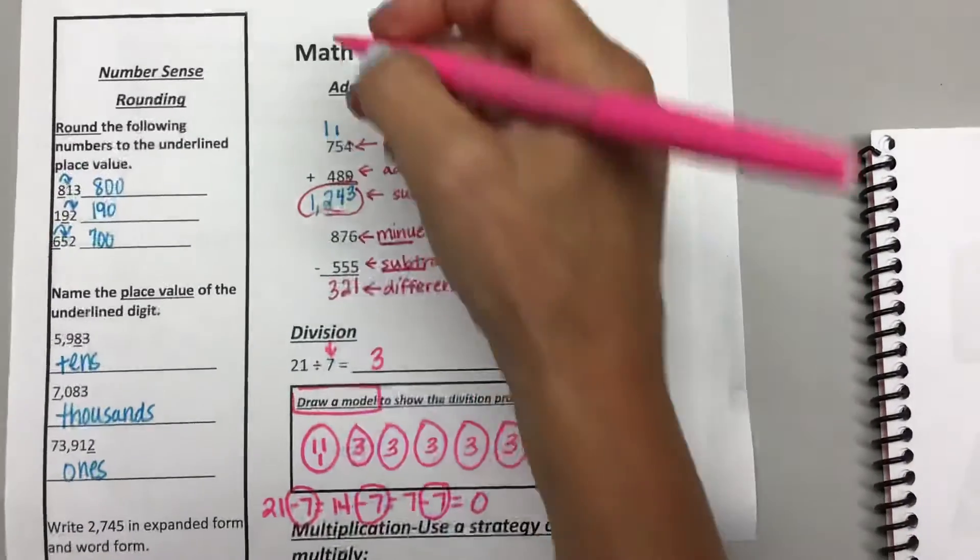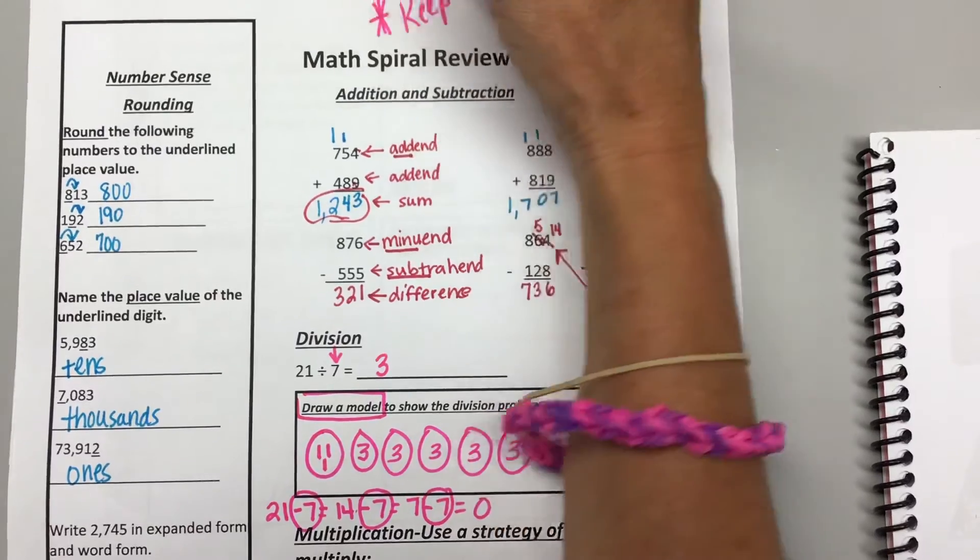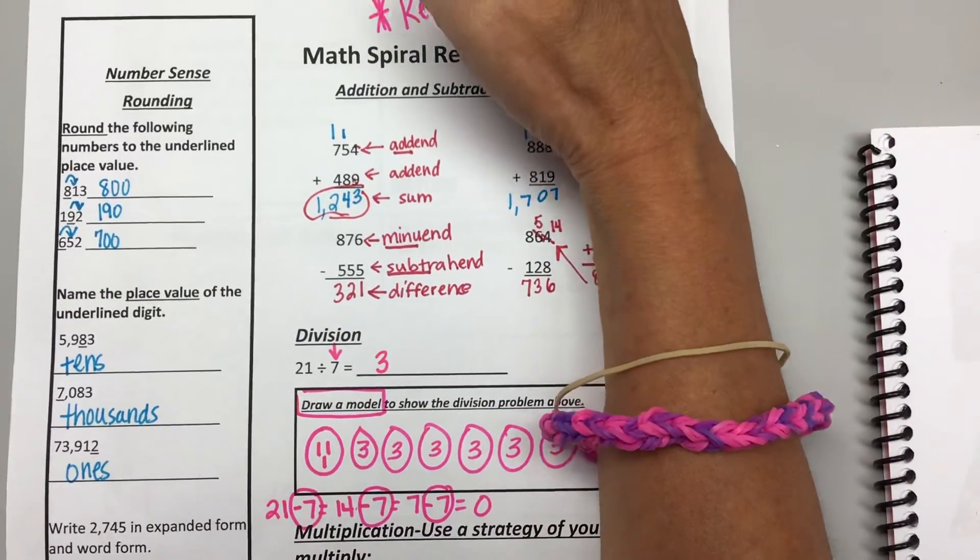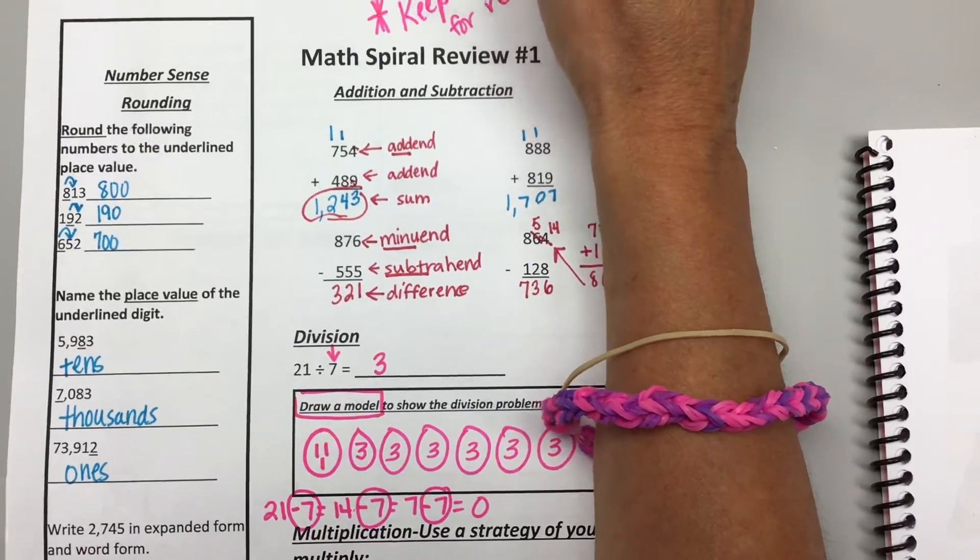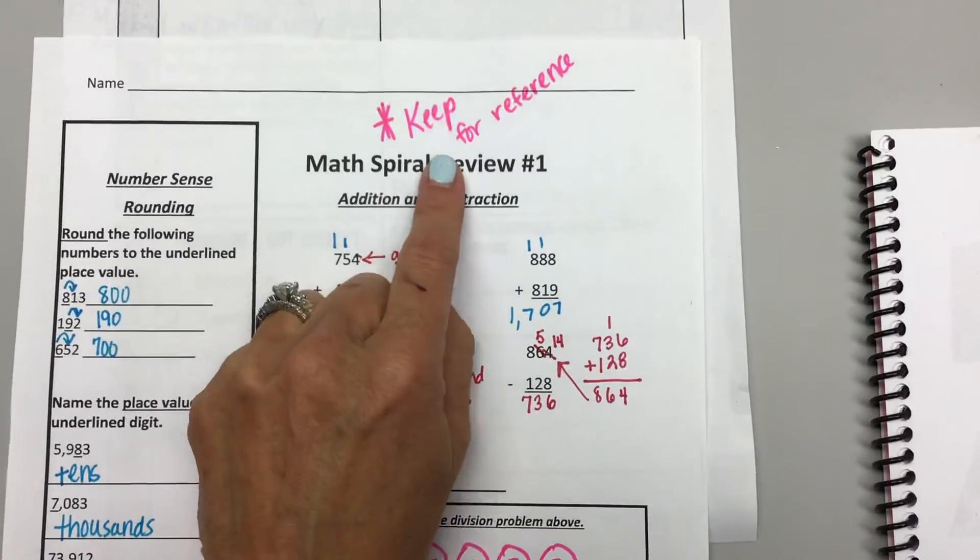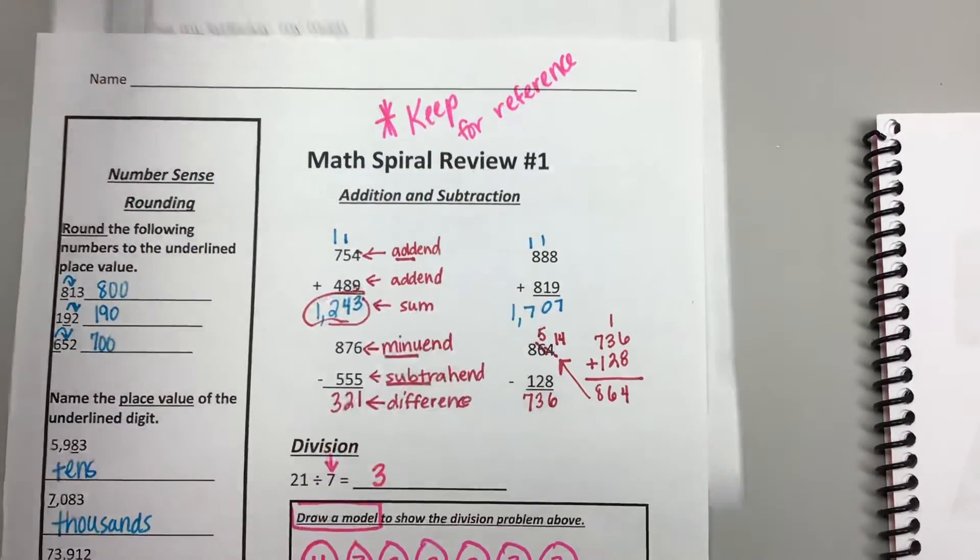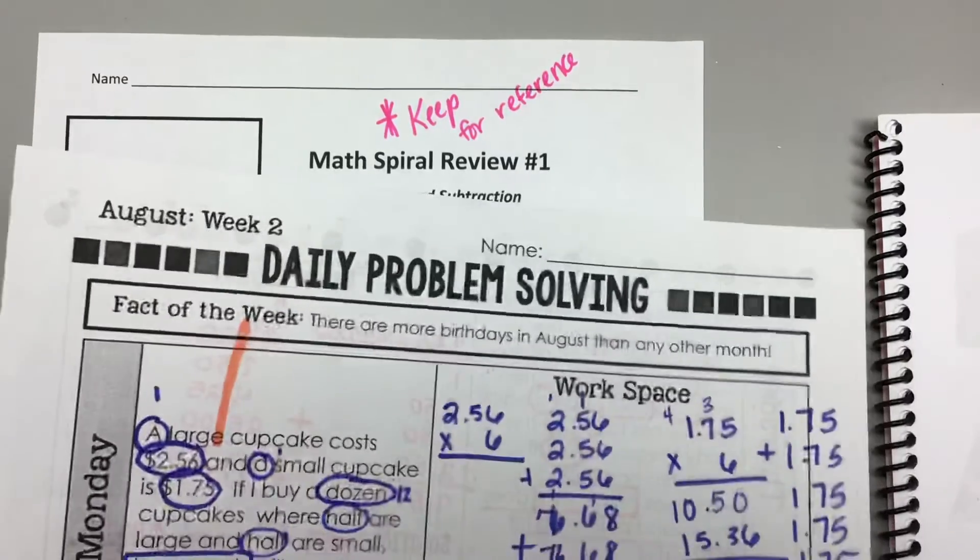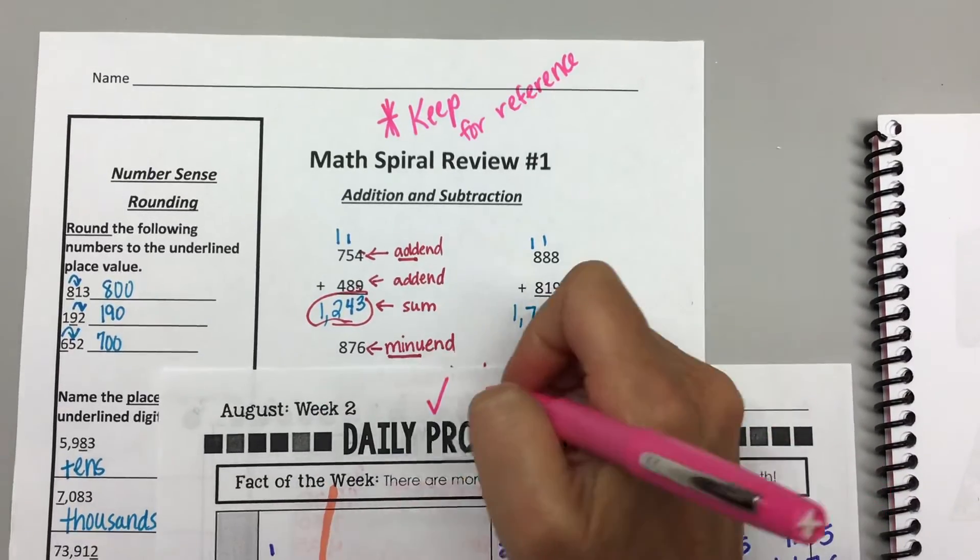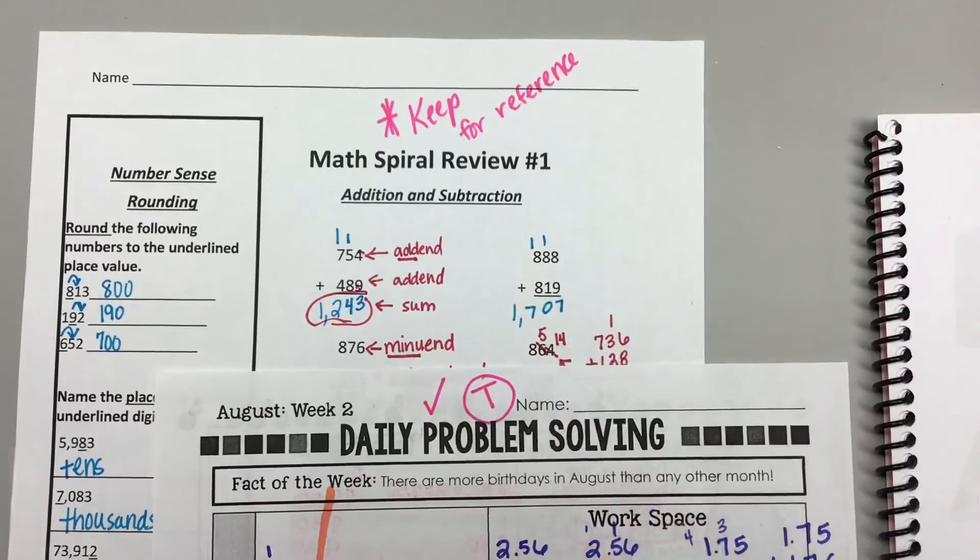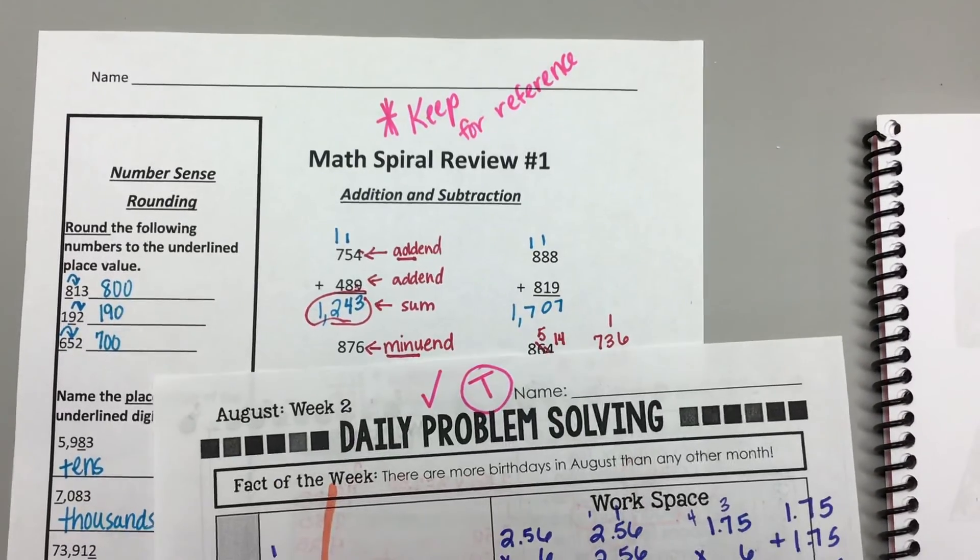Okay, listen closely. Lastly, I want you to put this in your red math folder, and we're going to keep it for reference. That means next week we can look back at this if we need help. And then this problem-solving page can go home. Put a check mark on it so your mom and dad know we went over it, or you can put a T to know we did it together. That can go in the left side of your VIP folder.